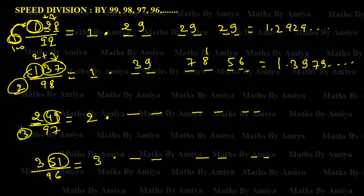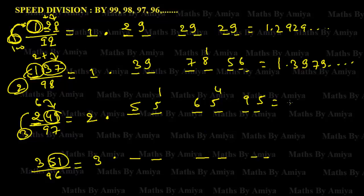For 249 divided by 97: the gap is 3. Multiply 3 × extra digit 2 = 6, add 49: 6 + 49 = 55. Gap is 3, so 55 × 3 = 165, then 165 × 3 = 495. The first four decimal digits are 2.5165... — so approximately 2.516. Adding carries: 65 + 4 = 69, so about 2.516 or 2.569.